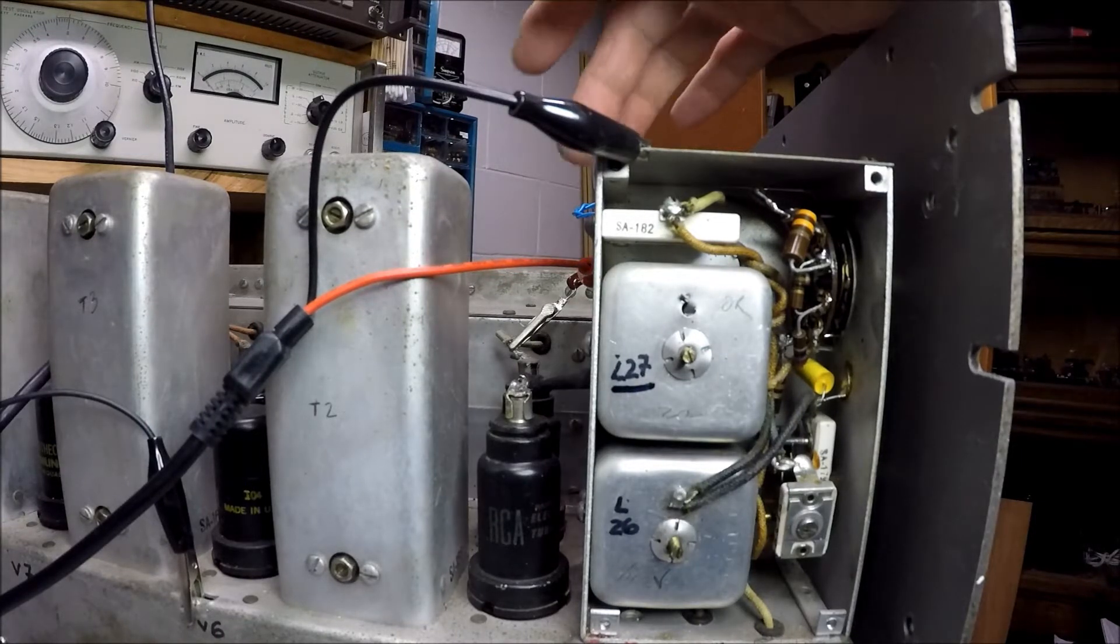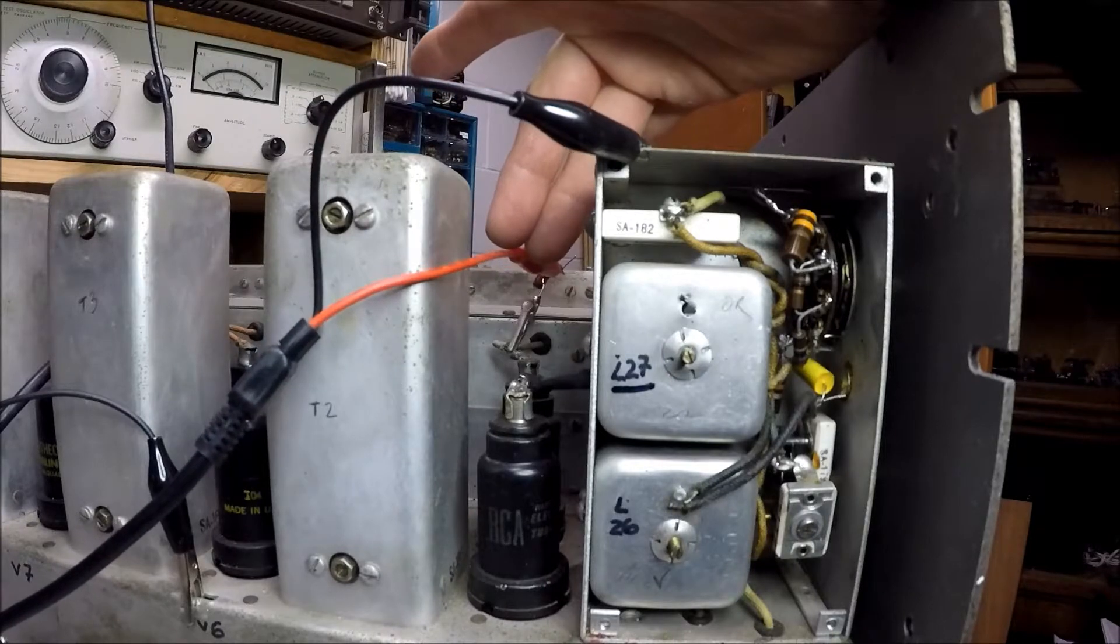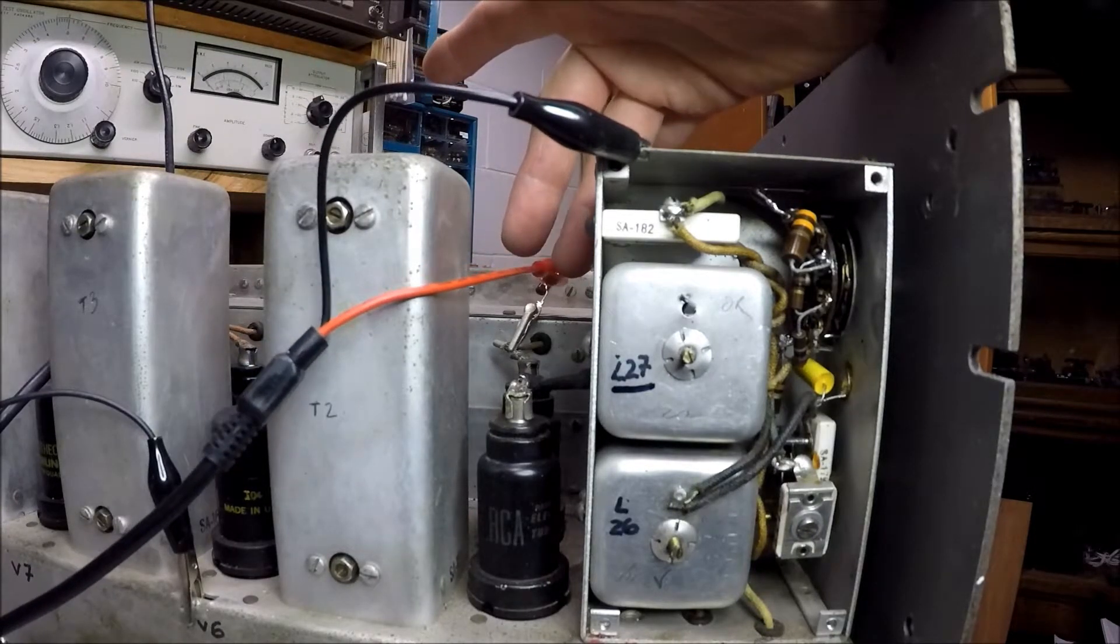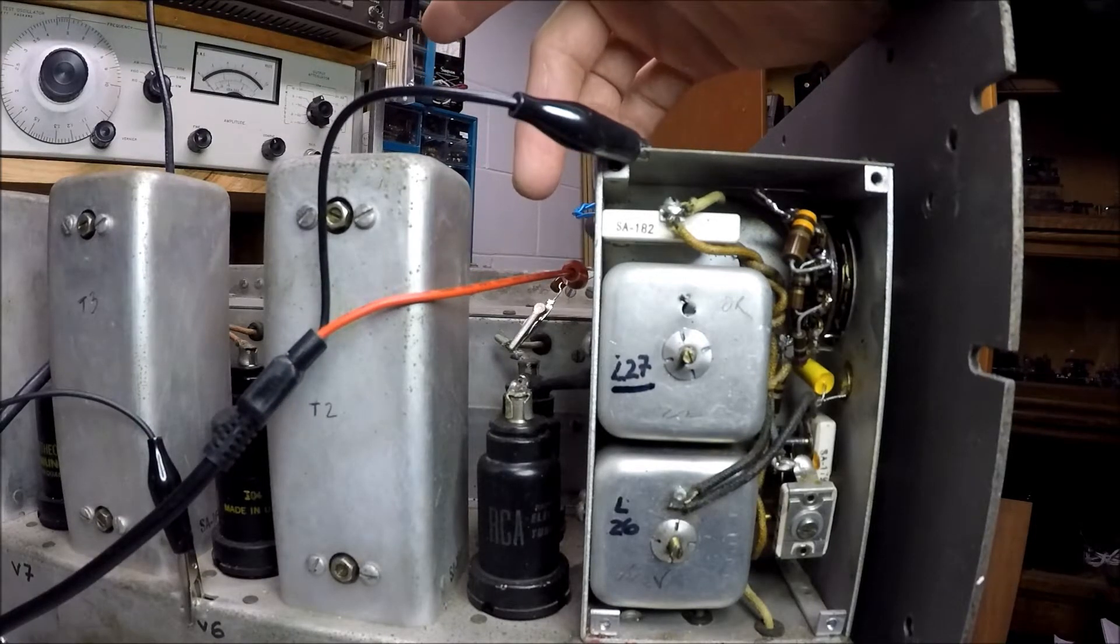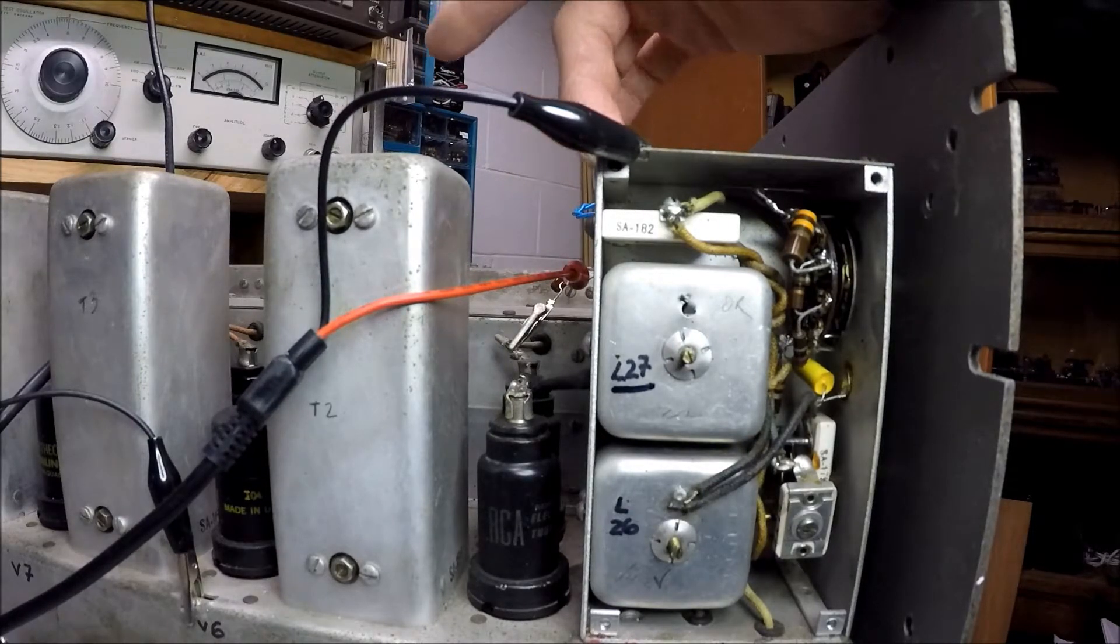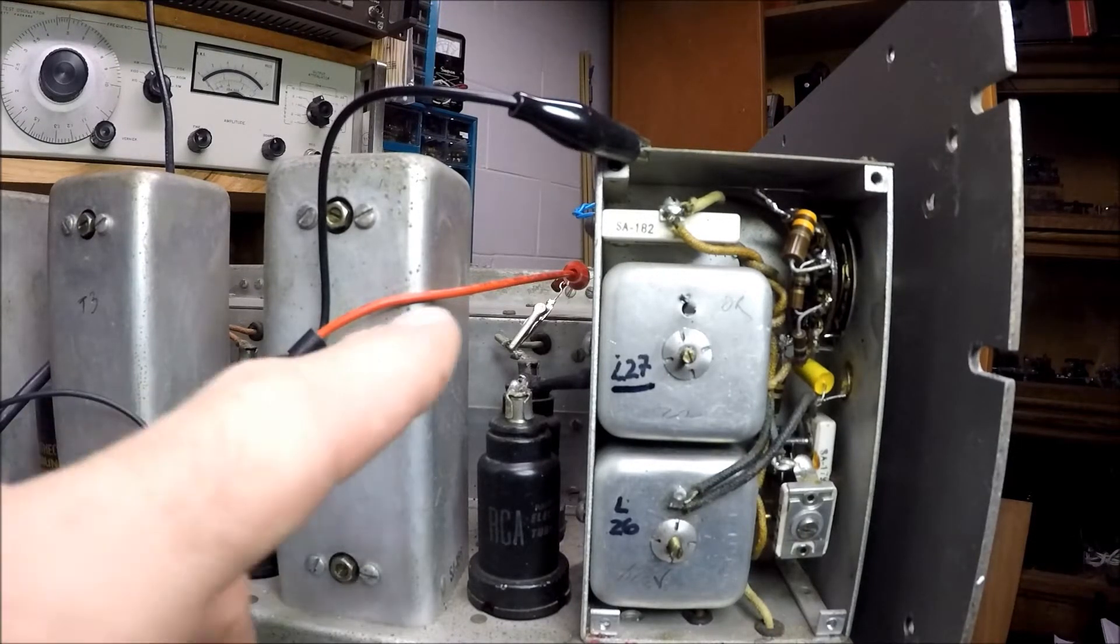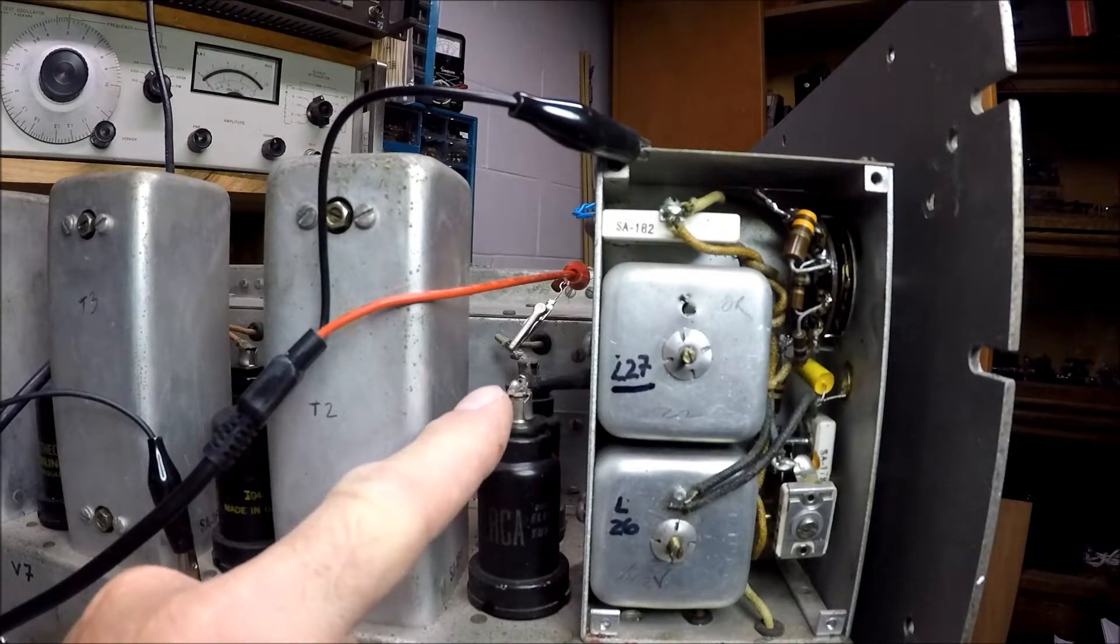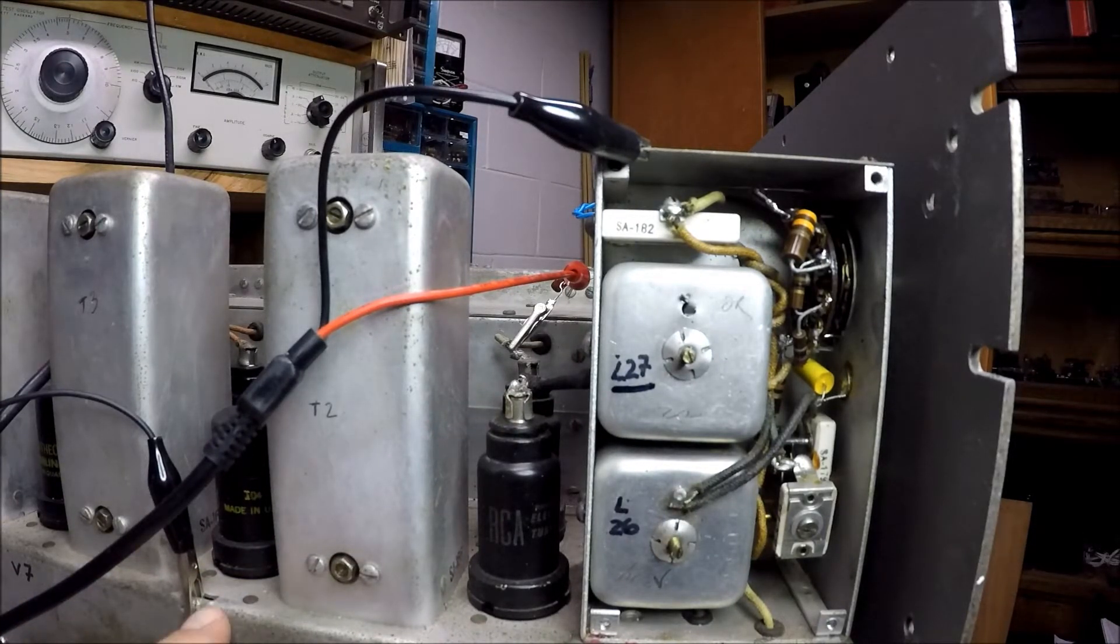Once again, the sweep function generator is inputted here at the grid cap of V3. And you can look at the output of this system by coupling to the grid cap of V5 or the output of V6.